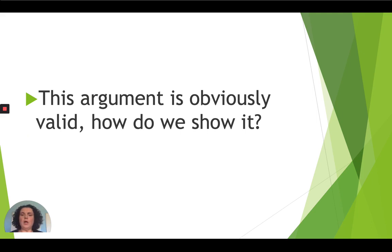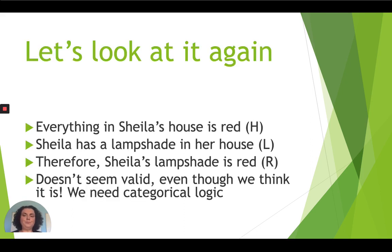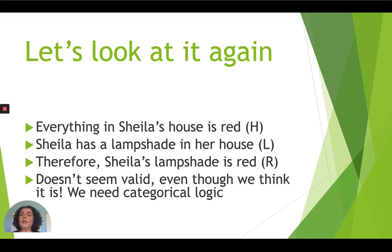This argument appears to be obviously valid. But if we try to show its validity based on the systems we have used up until now, we find ourselves falling short. If we symbolize the premises as H and L, and the conclusion as R, then H, L, therefore R doesn't seem valid, even though if the premises are true, the conclusion must necessarily be true. We need another piece to our logical system — we need the notion of a category.